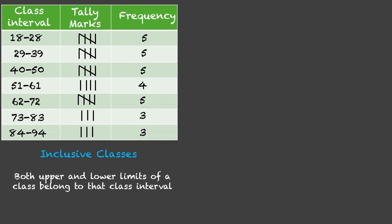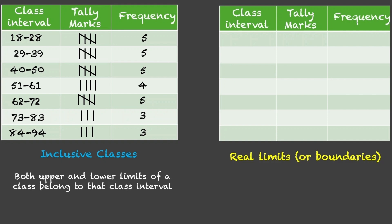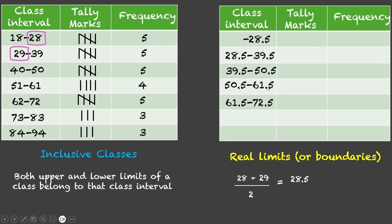In such cases, what we do is, we construct real limits or boundaries for every class. Now, how do we do that is, we find out the average of upper limit of that class and lower limit of next class. So, the average will be 28 plus 29 divided by 2, which is 28.5. Now, this becomes the upper boundary of this class and lower boundary of next class as well. So, we will continue like this. Similarly, for next class, we will find out the average of 39 and 40, which will be 39.5. So, its upper boundary is 39.5. The lower boundary of next class will also be 39.5. We will continue like this. This will be 50.5, then we have 50.5 to 61.5 and so on.